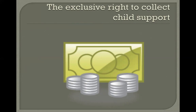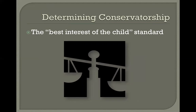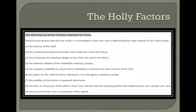Now let's talk about how the court determines conservatorship. The court determines conservatorship by considering a set of factors that will help decide what is in the best interest of the child. A non-exhaustive list of those factors includes: the desires of the child; the physical and emotional needs of the child now and in the future; the physical and emotional danger to the child now and in the future; parental abilities; programs available to assist the individuals to promote the best interests of the child; the plans for the child by individuals or agencies seeking custody; the stability of the home or proposed placement; and the acts or omissions of the parent which may indicate the existing parent-child relationship is not a proper one, or any excuse for those acts or omissions.